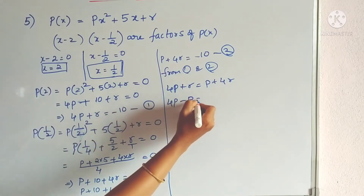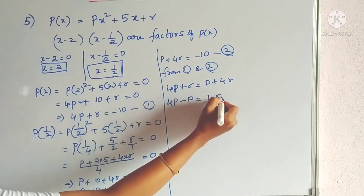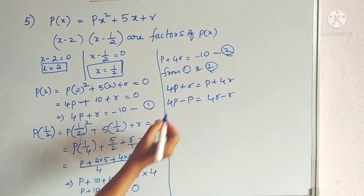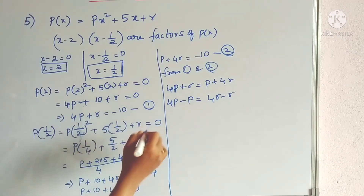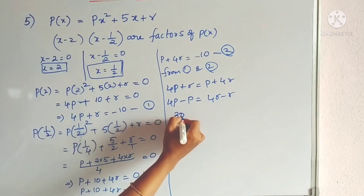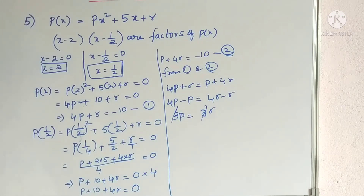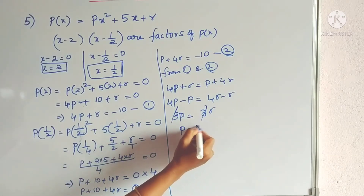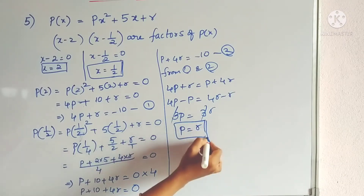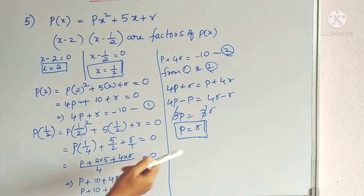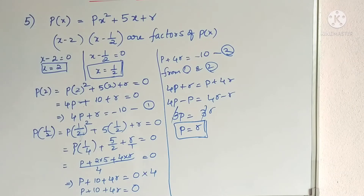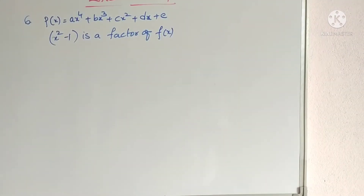Bringing all p's to one side and r's to the other: 4p − p = 4r − r, giving 3p = 3r. The 3s cancel, so finally p equals r. This is what we had to show in this problem.